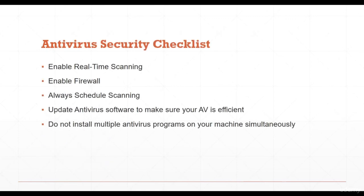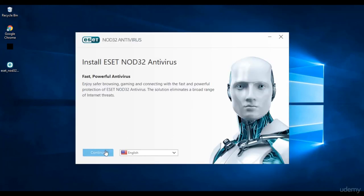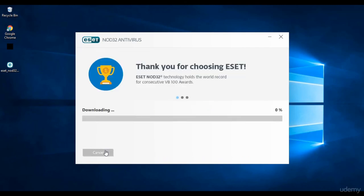Antivirus security checklist: enable real-time scanning to ensure viruses, worms, and trojans are detected at all times; enable firewalls; schedule regular scanning; keep antivirus software updated for efficiency; and do not install multiple antivirus programs simultaneously. As an example, let's configure ESET NOD32 antivirus. Download the trial or full version and run the installer exe file.